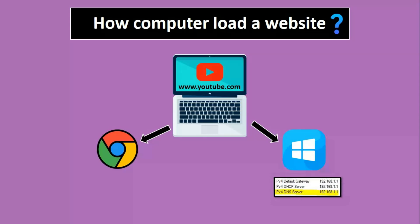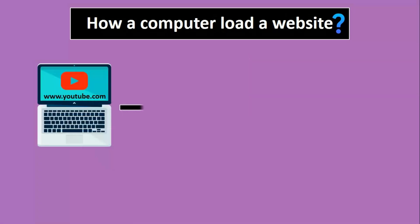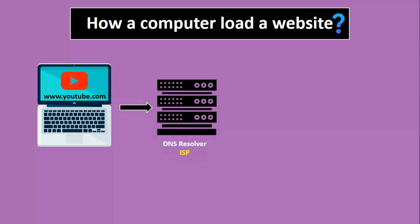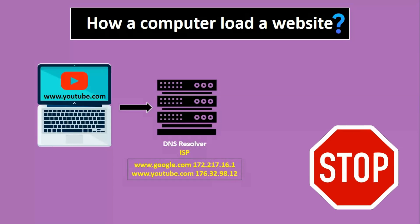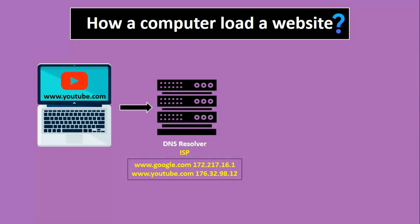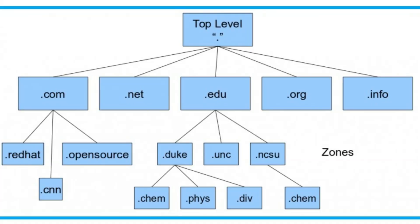The DNS resolver sends the DNS query to the configured DNS server in the operating system — here we have configured DNS server 192.168.1.1. The system sends the request to the DNS resolver at 192.168.1.1, which tries to find the youtube.com IP address. If the IP address is found in the DNS resolver, the process stops there. If not found, it sends the query to one of the 13 root DNS servers on the internet.